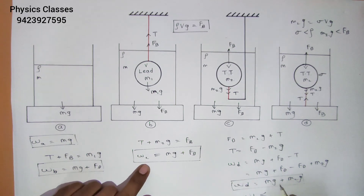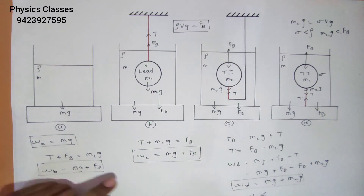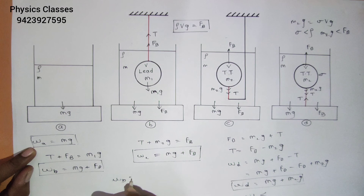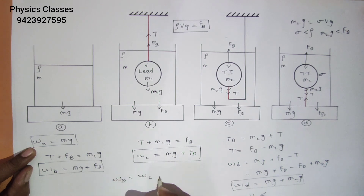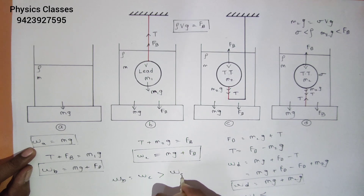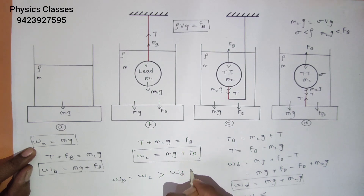So we can write: WB = WC, because they both read the same weight, and both are greater than WD, which is in turn greater than WA.